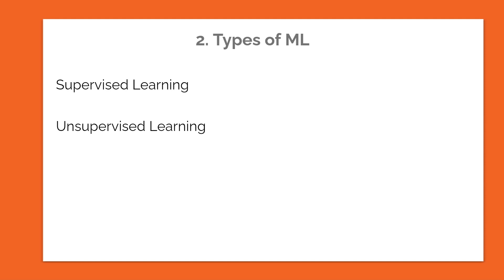The next type of machine learning is unsupervised learning. Unsupervised learning involves learning from unlabeled data where the desired output is also not known. The goal of unsupervised learning is to find patterns or structure in the data.